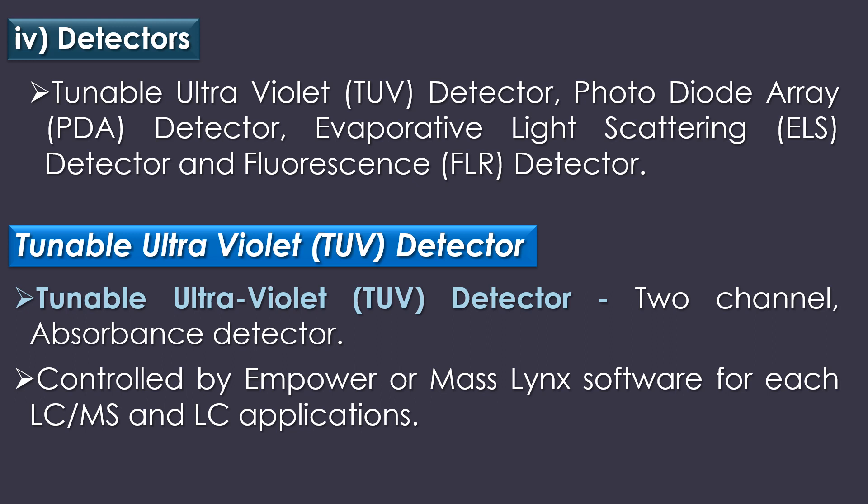The system is often organized with four types of detectors: tunable ultraviolet detector (TUV), photo diode array detector (PDA), evaporative light scattering detector (ELS), and fluorescence detector (FLR). The tunable ultraviolet detector is a two-channel absorbance detector controlled by Empower or MassLynx software for LC-MS and LC applications.